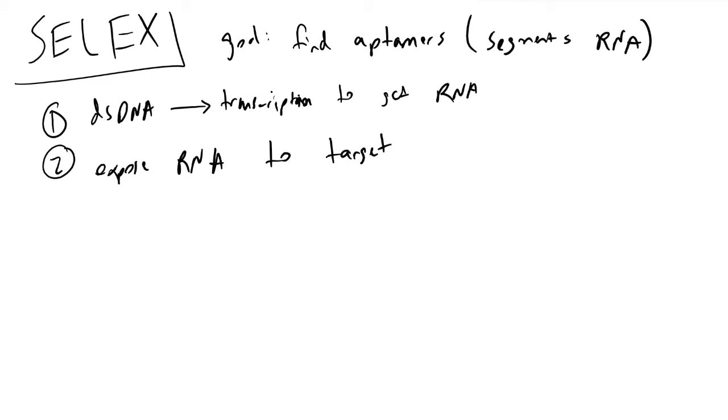After that, the RNA takes on secondary structures which are sometimes very hard to understand. We don't really care what those structures are, we just care if it has an affinity for our target. We wash away the RNA that doesn't stick to our target.